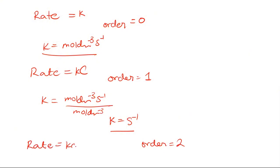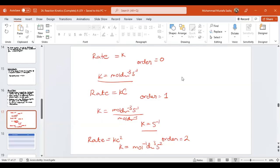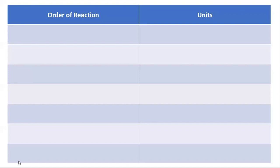For order equal to 2, rate equals k times c², and the units of k work out to mol⁻¹ dm³ s⁻¹. You can see a table here with two columns: order of reaction and units of k. The order goes from 0, 1, 2, 3, 4, and 5.